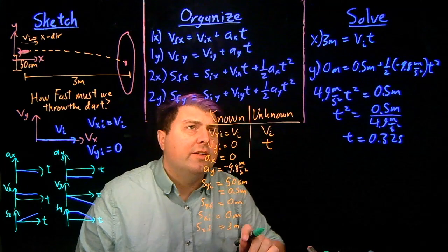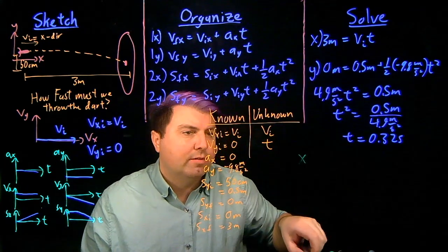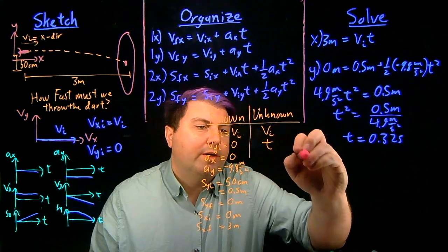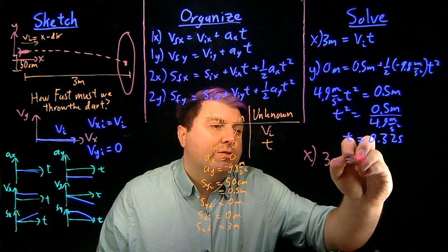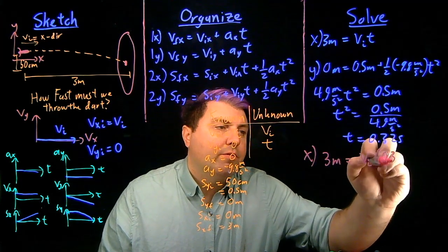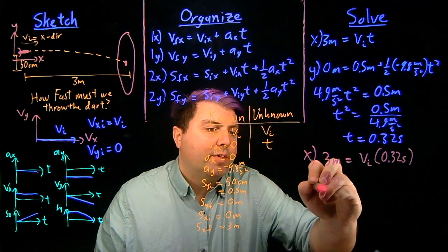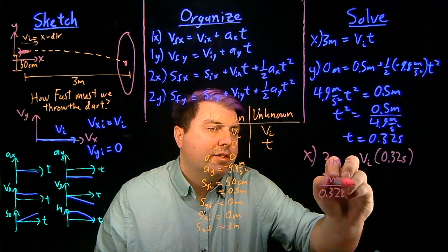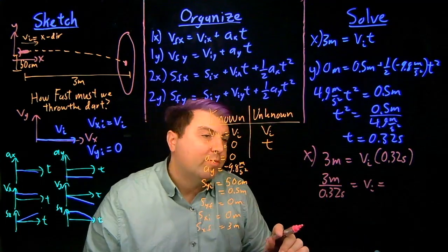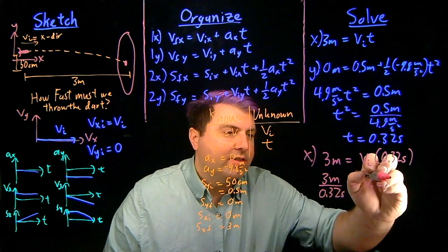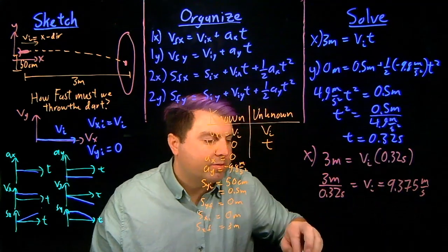So now what I can do is I can use this time up in this equation, so back in my x equation, I have 3 meters equals vi times 0.32 seconds. And so then 3 meters divided by 0.32 seconds is equal to my initial velocity, which gives us 9.375 meters per second.